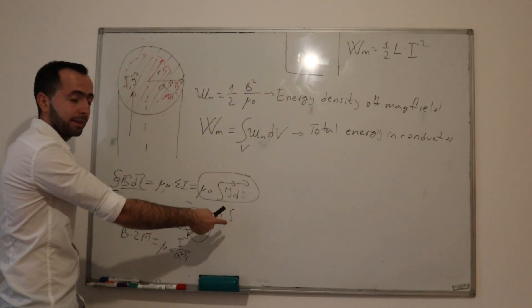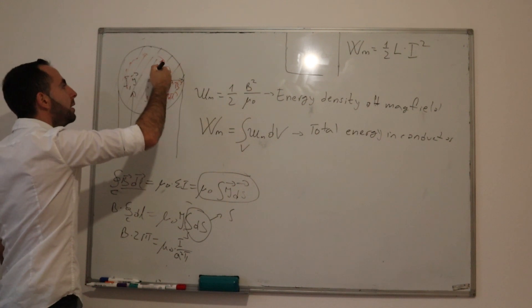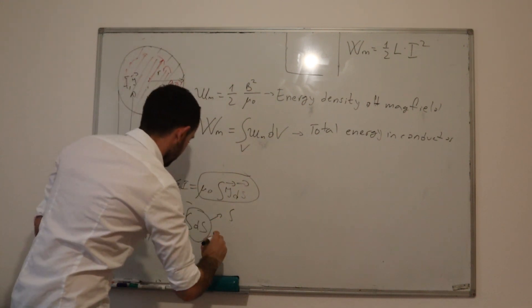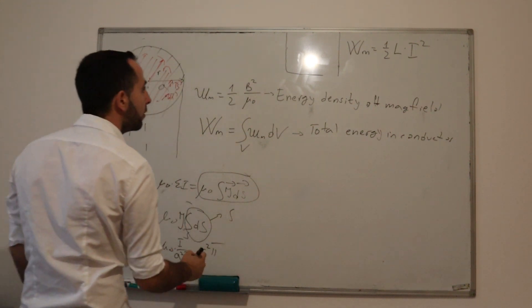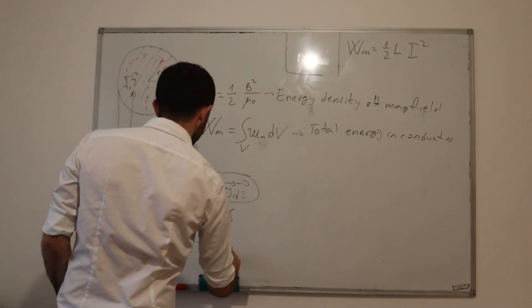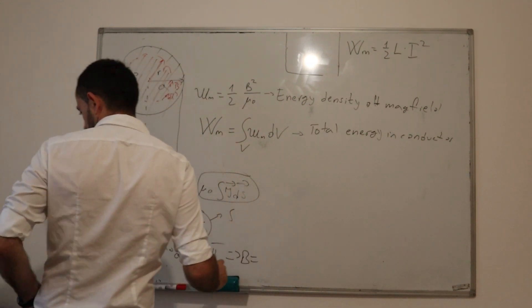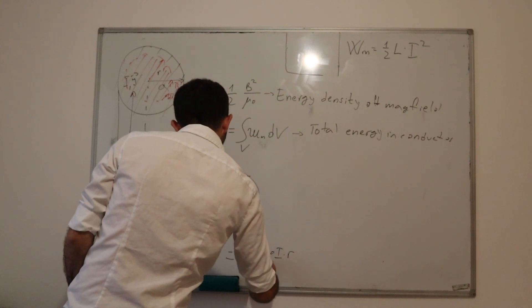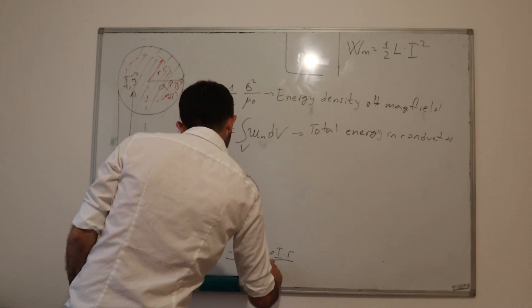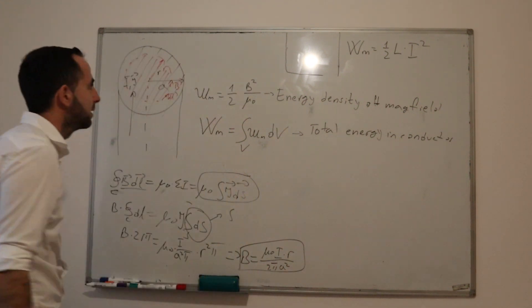Integral of dS of surface S is S. But what's this surface? This is the surface created with our closed contour. So its radius is R, which means this is R²π. So from here, we will once again get that B is equal to μ₀I times R divided by 2πA².